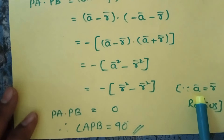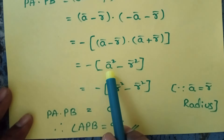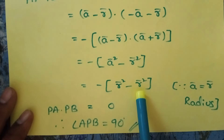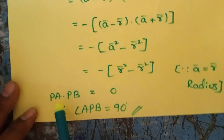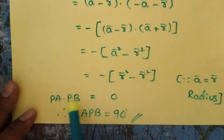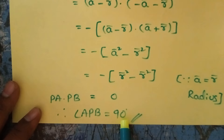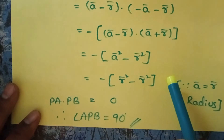Since A equals R — why? Because A is a radius and R is also a radius. So, substituting R in place of A, R minus R gets cancelled to 0. So the dot product of PA dot PB is equal to 0. Then the angle between these two vectors, angle APB, is equal to 90 degrees. So this is the proof that the angle in a semicircle is a right angle.